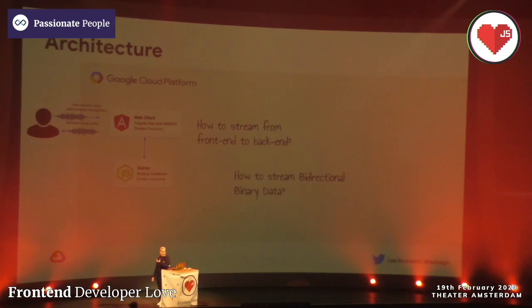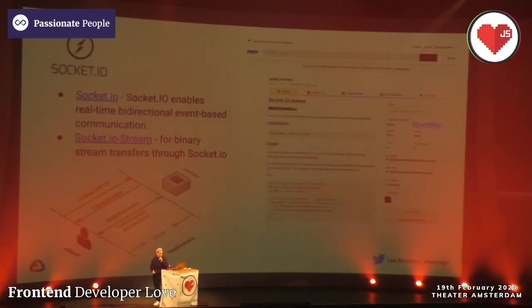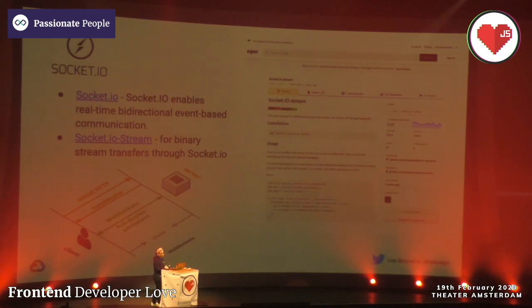Then I have this stream and I want to bring it to the back end on Node.js. It was difficult because I needed it to be bidirectional — stream both ways — and it's binary data. I think you can do this with AJAX as well, but because it's binary data, Socket.io stream — which is a plugin on top of Socket.io — worked really well because it just worked out of the box.